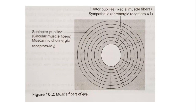Coming to the diagram, which beautifully shows the two types of iris muscles: sphincter pupillae, also called circular muscle fibers, is innervated by the parasympathetic nervous system. It contains muscarinic cholinergic receptors — the subtype present here is M3 receptors.